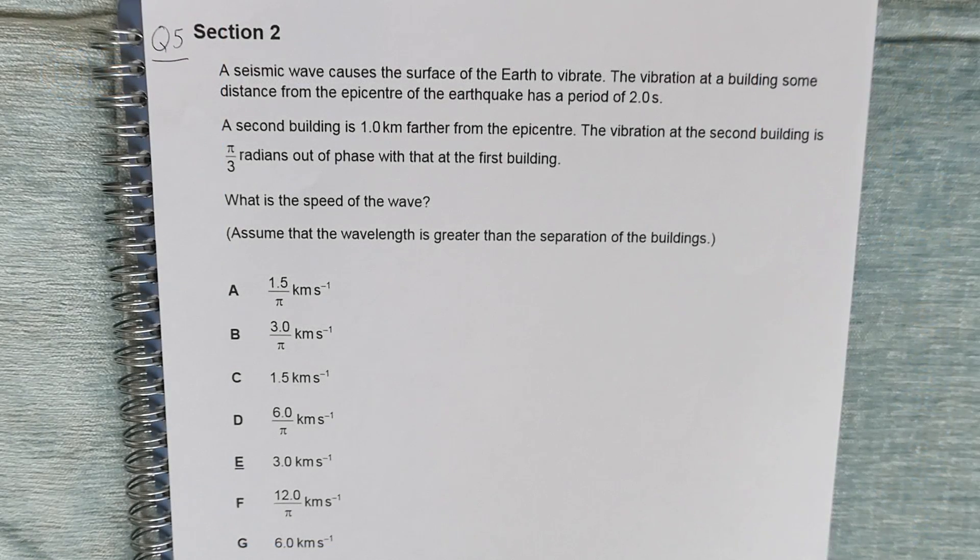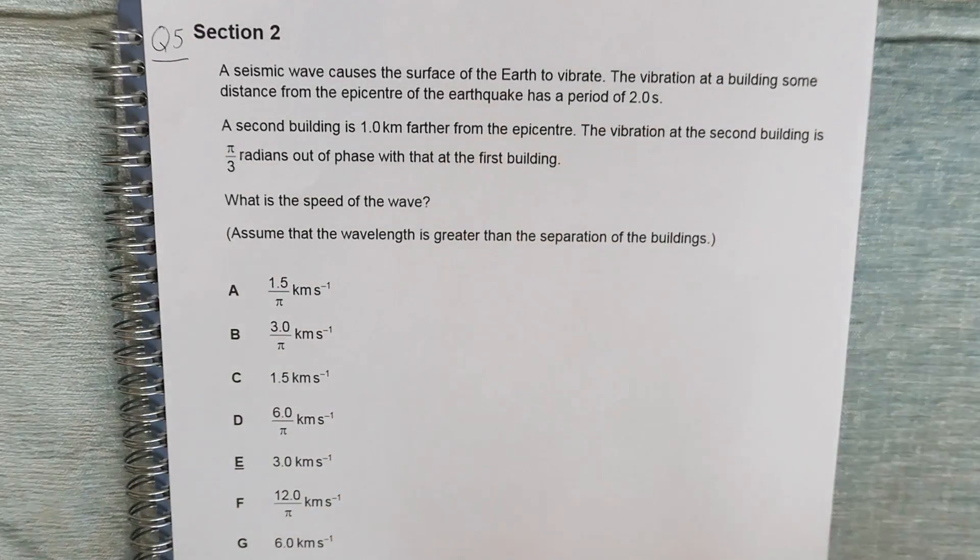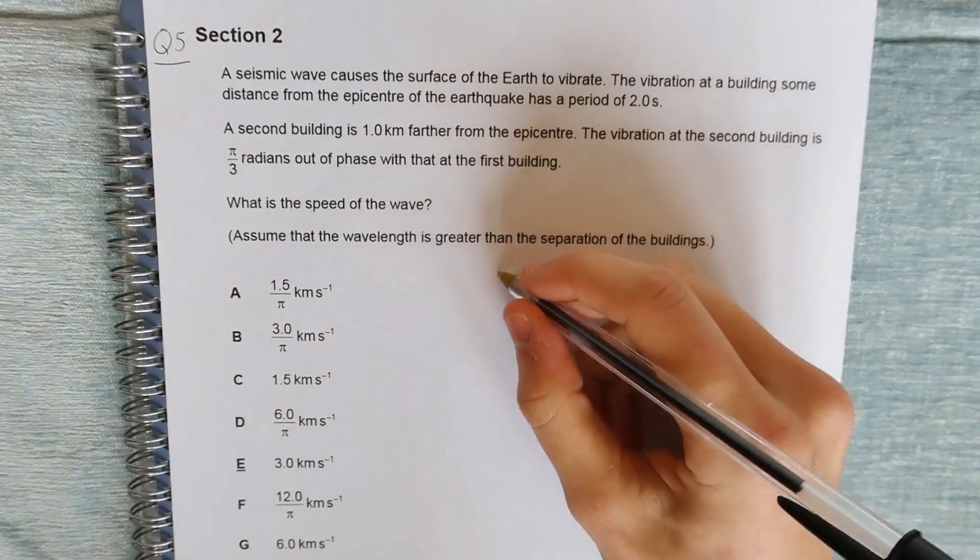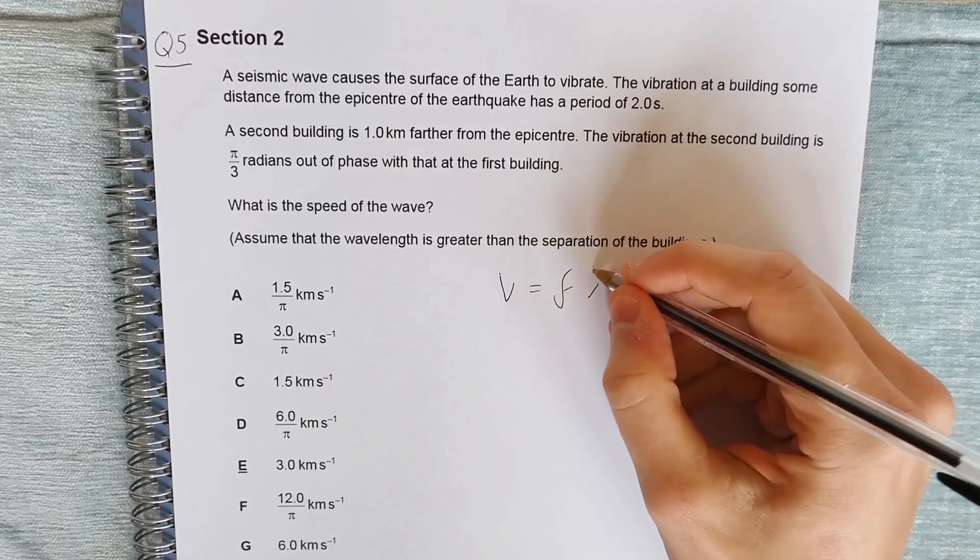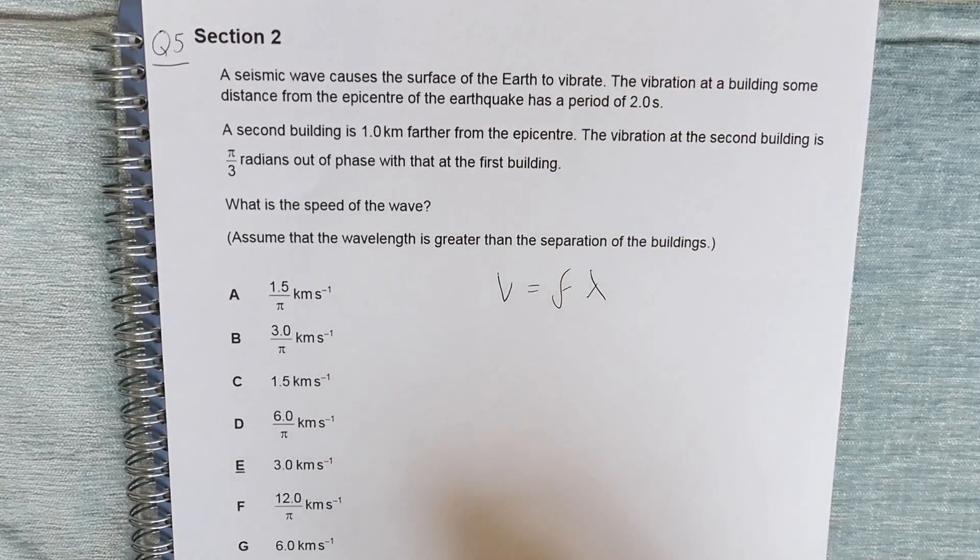So this is question 5, which is our first from section 2. A seismic wave causes the surface of the Earth to vibrate. The vibration at a building some distance from the epicentre of the earthquake has a period of 2 seconds. A second building is 1 kilometer further from the epicentre. The vibration at the second building is pi over 3 radians out of phase with that at the first. What is the speed of the wave?